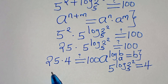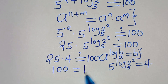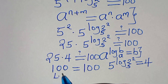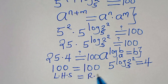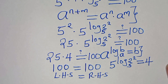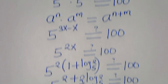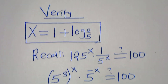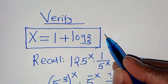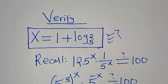Now 25 times 4 equals 100, which equals 100. So the left-hand side equals the right-hand side, and this affirms that x equal to 1 plus log base 5 of 2 satisfies the equation. Kindly follow the steps.